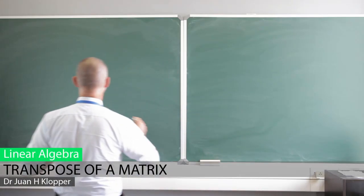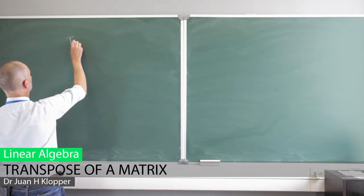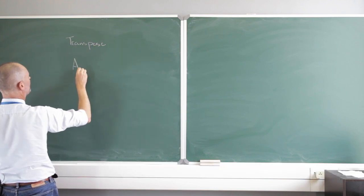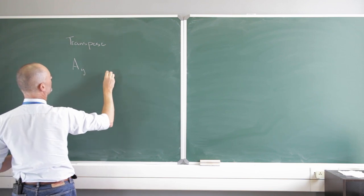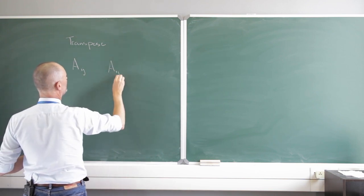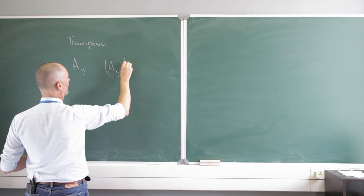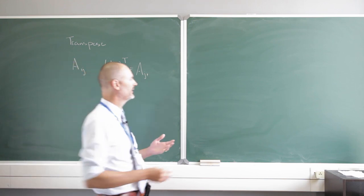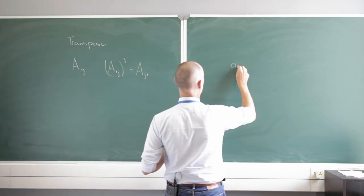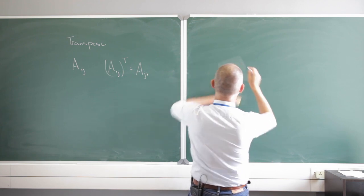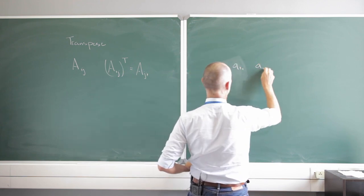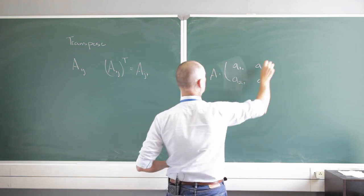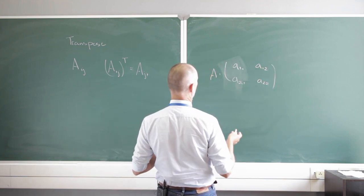Today in algebra we have a very simple concept: the transpose of a matrix. If I have a matrix A with columns I and J, the transpose — written as A^T — is where we interchange rows and columns. So if I have a 2x2 matrix with entries A11, A12, A21, A22, I'm going to interchange rows and columns.